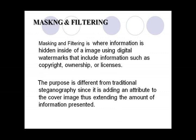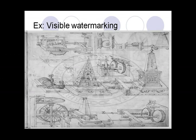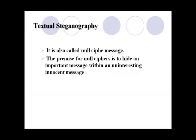Another technique is masking and filtering. In steganography, masking is similar to the watermarking you see on copyrighted material. We use watermarking to protect data so that it cannot be easily copied. For example, a company plan has a watermark on the back of the paper so that whenever you print or photocopy the document, the watermark is also printed.